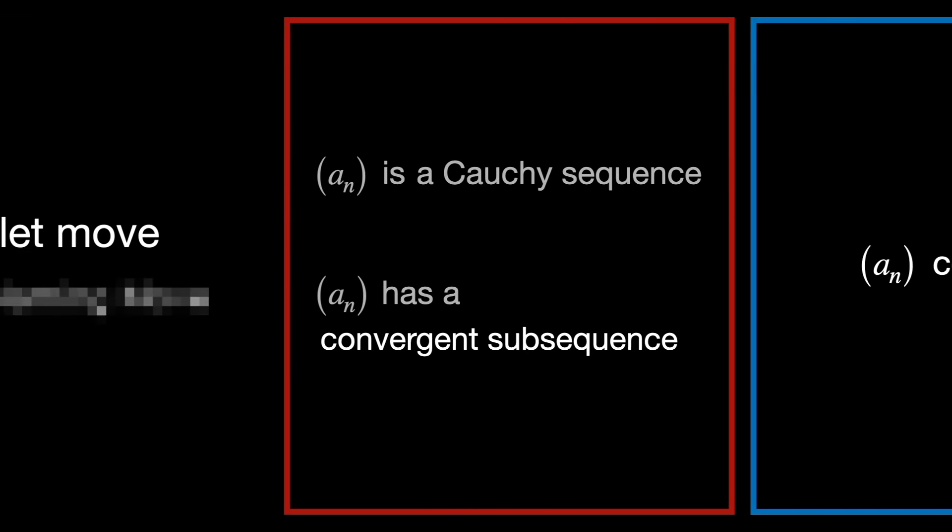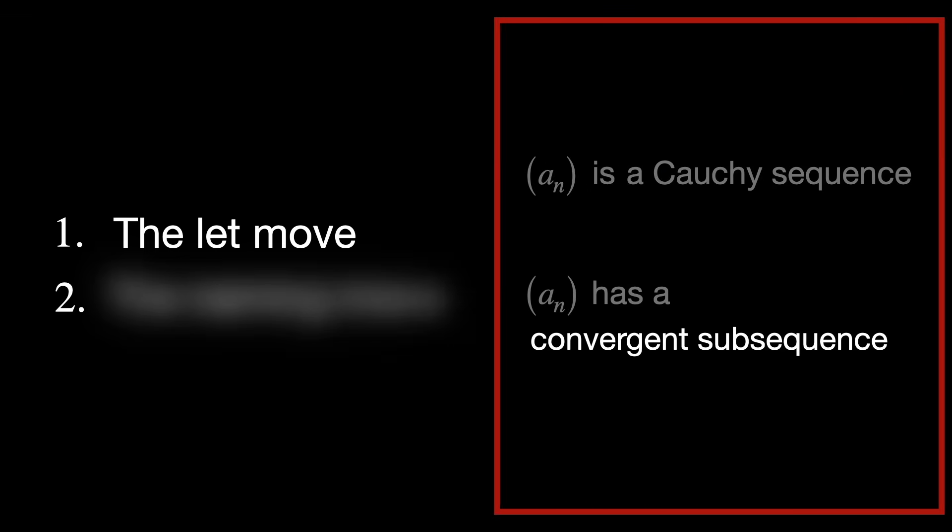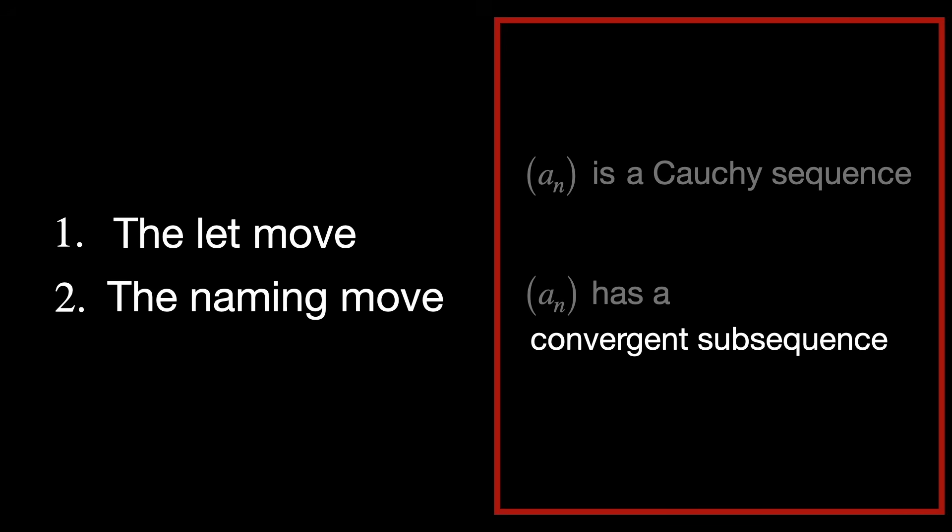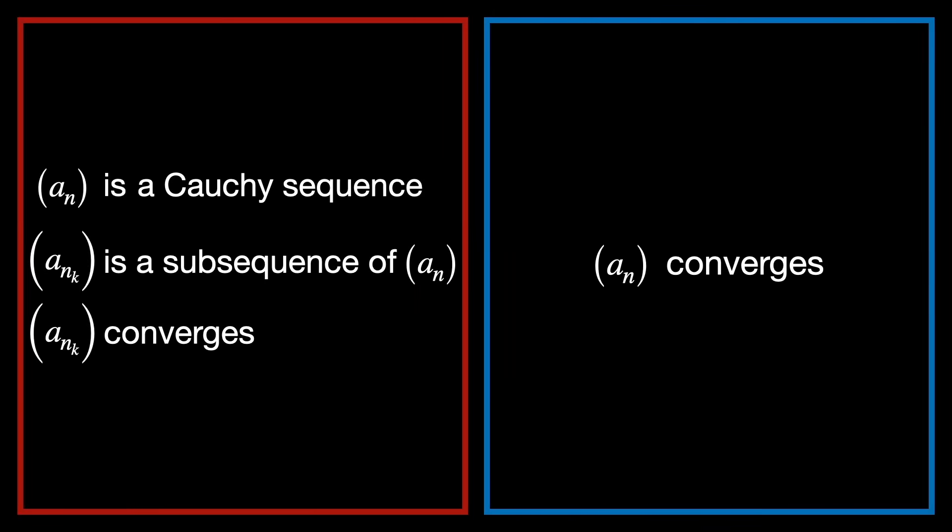Now, it would be appropriate to give a name to the convergent subsequence, because if you are told that you've got something, you need to name it. We're going to call it a sub n sub k, because we want to remember that it is a subsequence of the sequence a sub n, and that it converges. We're going to list these two properties separately, for the sake of clarification.